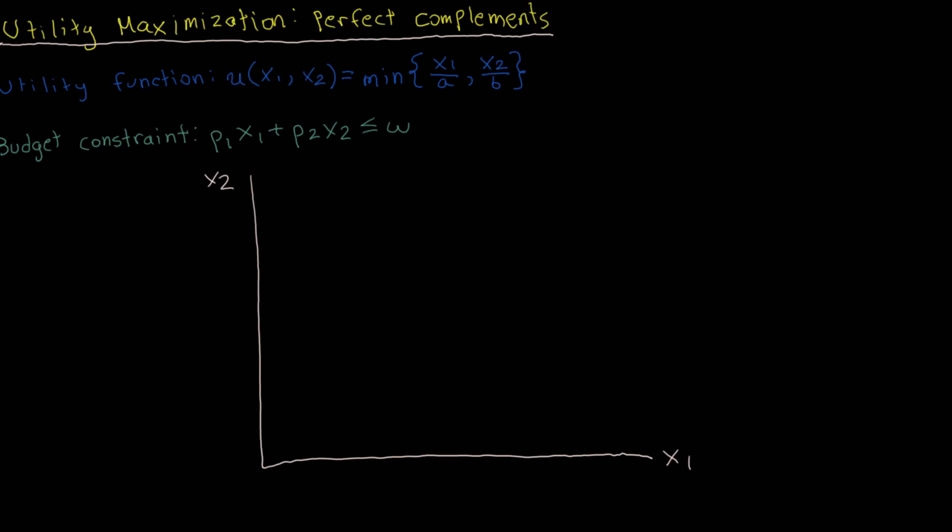In this video, I will be going over the utility maximization problem for perfect complements. Specifically, I will be going over a graphical interpretation of a solution to this problem, and then I'll go over the analytical solution, in which case I will be solving for the demand functions of two goods.